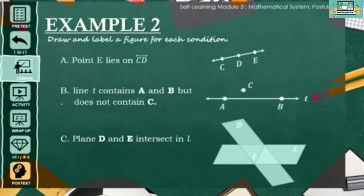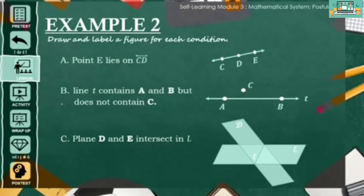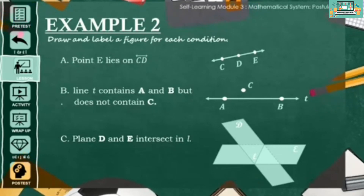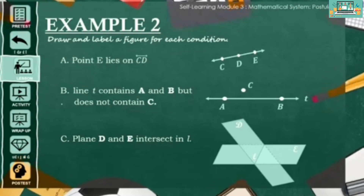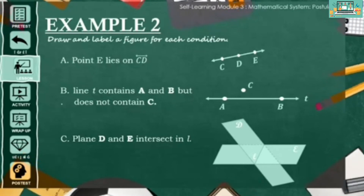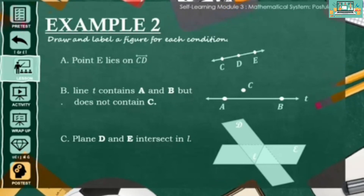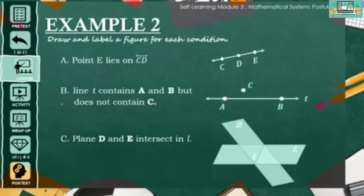For your last figure, draw plane D and plane E intersecting in line L. I know it's a little bit tricky to draw, but is your figure something like this one, or similar perhaps? Great.